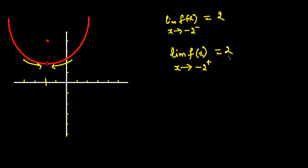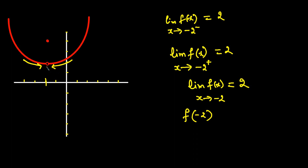Since the limit from the left and the limit from the right are both 2, the limit exists. The limit of the function as x approaches negative 2 is equal to 2. There is a hole at negative 2, so we look at the solid dot — when x = negative 2, the closed circle gives f(negative 2) = positive 4.